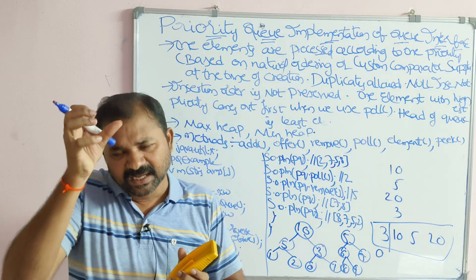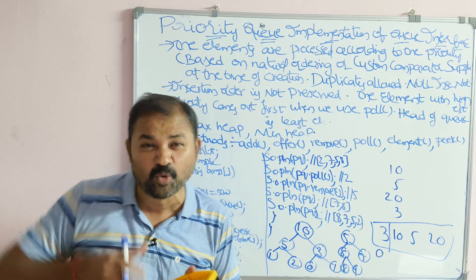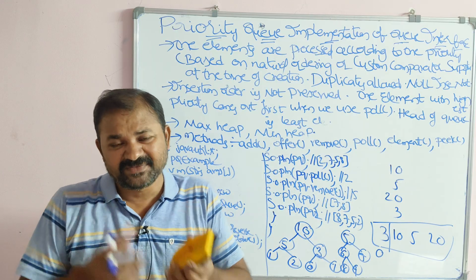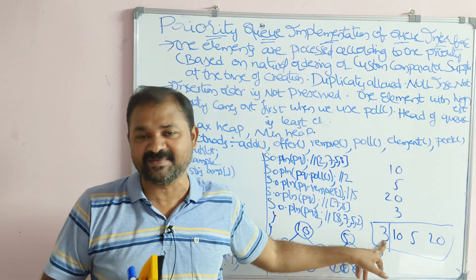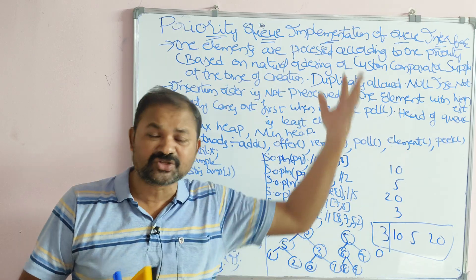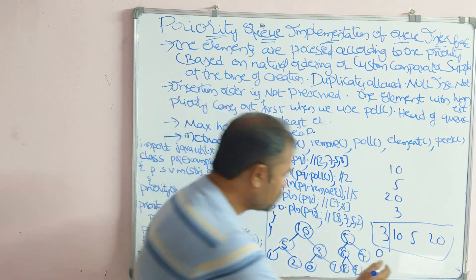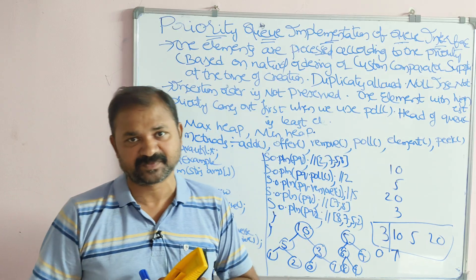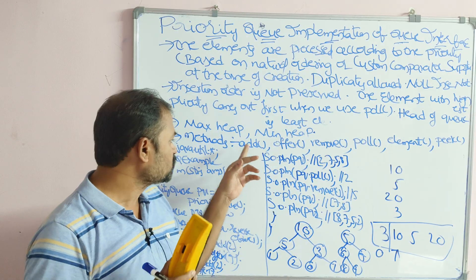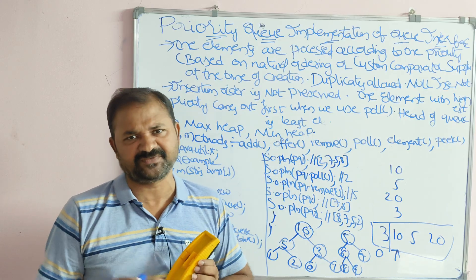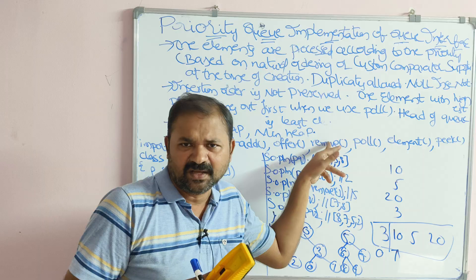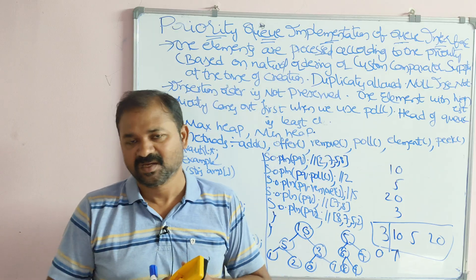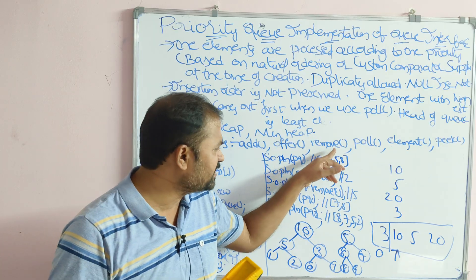With the remove method, the top element will be returned and removed. Here, the top element is 3, so 3 will be removed and returned. If removal is successful, remove returns the deleted element. When the removal operation fails — i.e., when the queue is empty — remove throws an exception.